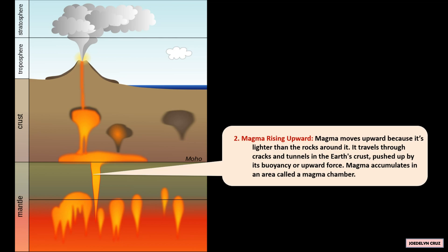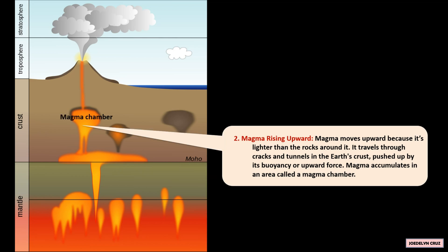Magma moves upward because it's lighter than the rocks around it. It travels through cracks and tunnels in the Earth's crust, pushed up by its buoyancy or upward force. Magma accumulates in an area called a magma chamber.